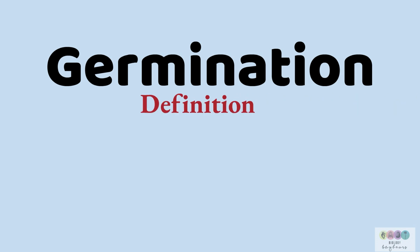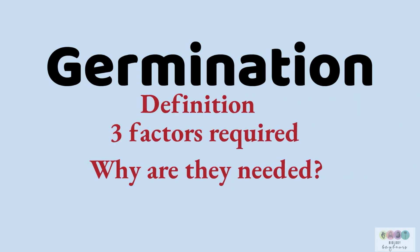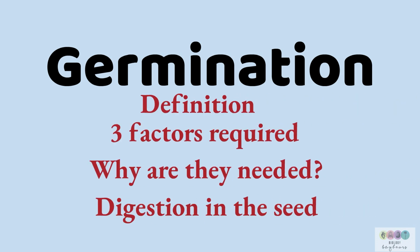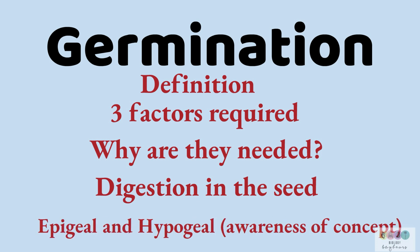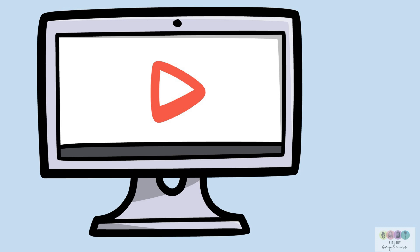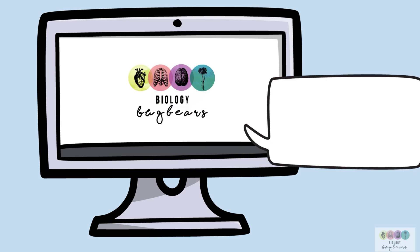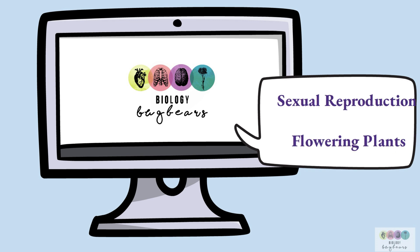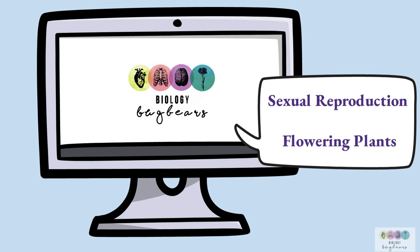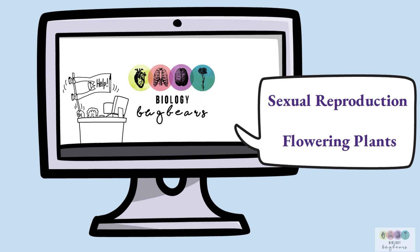For germination, know the definition, the three factors and why each is needed. Talk about digestion in the seed, and have an awareness of epigeal and hypogeal germination. There are lots of other videos on YouTube and a playlist on sexual reproduction in flowering plants. You have past papers with marking schemes, and if you're still stuck, always ask your teacher. Best of luck with all of that revision.